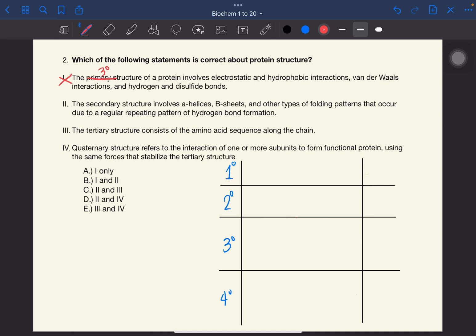Statement two. The secondary structure involves alpha helices, beta sheets, and other types of folding patterns that occur due to a regular repeating pattern of hydrogen bond formation. So this is correct. Alpha helices and beta sheets are examples of secondary structures of proteins. So wrong na yung A, wrong na yung B, and wrong na yung E.